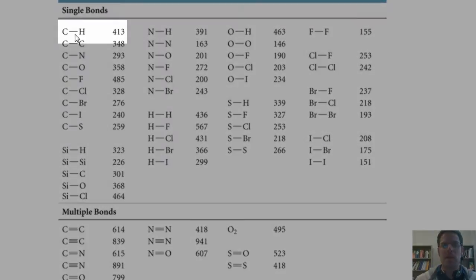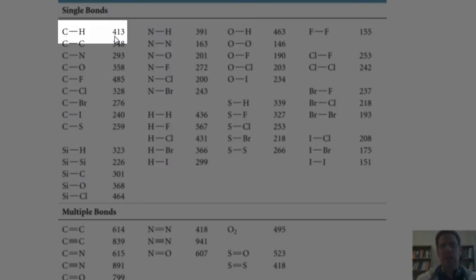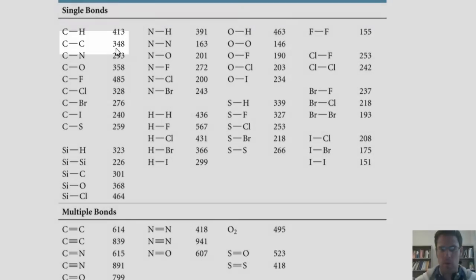We can see that illustrated in this table. For example, a carbon-hydrogen bond, when it is combusted, gives off 413 kilojoules per mole per carbon-hydrogen bond. Similarly, a carbon-carbon single bond is worth 348 kilojoules per mole,